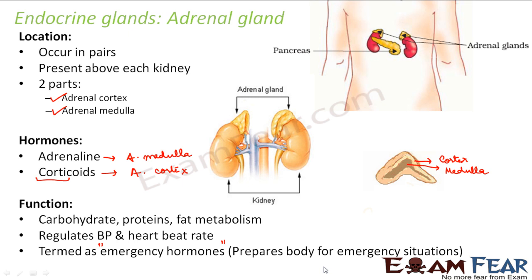For example, consider a deer in a jungle. Suddenly the deer sees a tiger running after it. It will start running to save its life — that is an emergency situation for the deer. When it runs, it needs a lot of energy. That extra energy comes from the heart: the faster the heart beats, the more oxygen is supplied, and the more energy is delivered to the muscles. This is how the body prepares to face emergency situations. Because of this function, adrenaline and corticoids are known as emergency hormones.